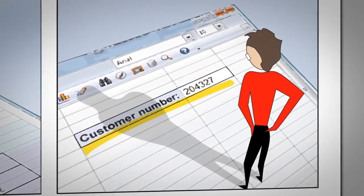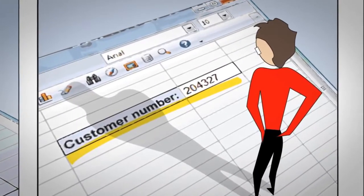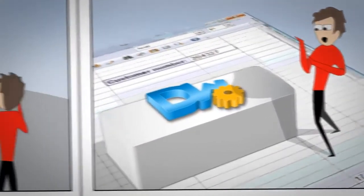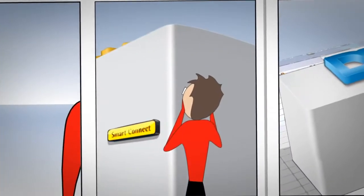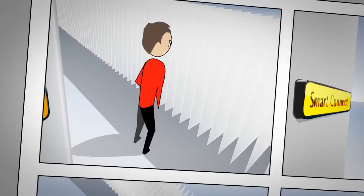Here we have a customer number, for example. Imagine that you must find all documents related to this customer. A magical button on the user interface of the exact application you are working with can do this for you. One mouse click and a list of all relevant documents is displayed.